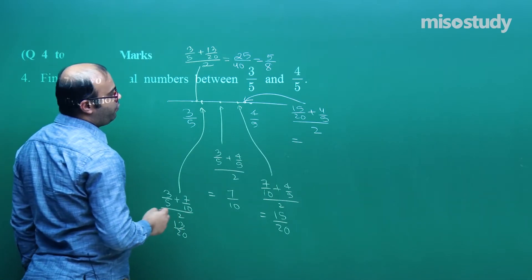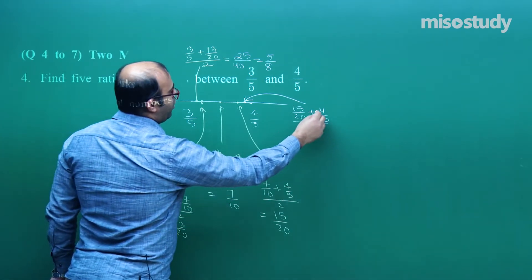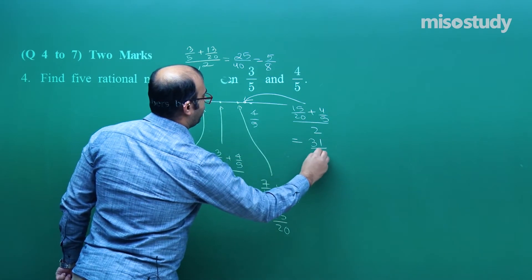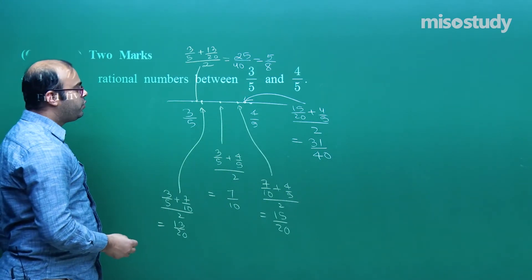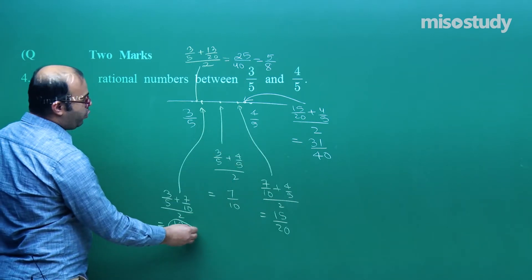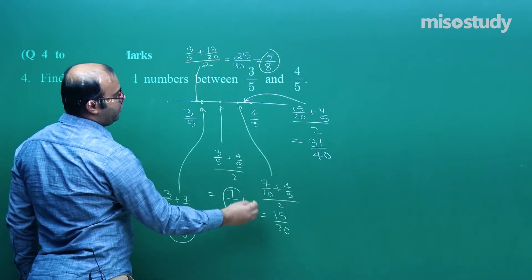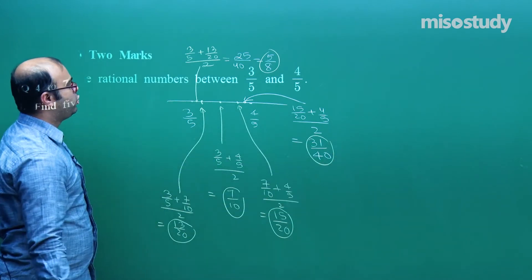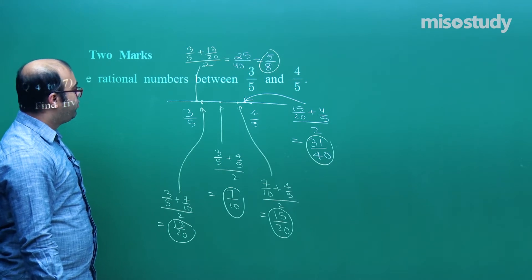For the fifth rational number, we take the average of 15/20 and 4/5: (15/20 + 4/5) / 2 = (15 + 16) / 40 = 31/40. So we now have five rational numbers between 3/5 and 4/5: 13/20, 5/8, 7/10, 15/20, and 31/40.